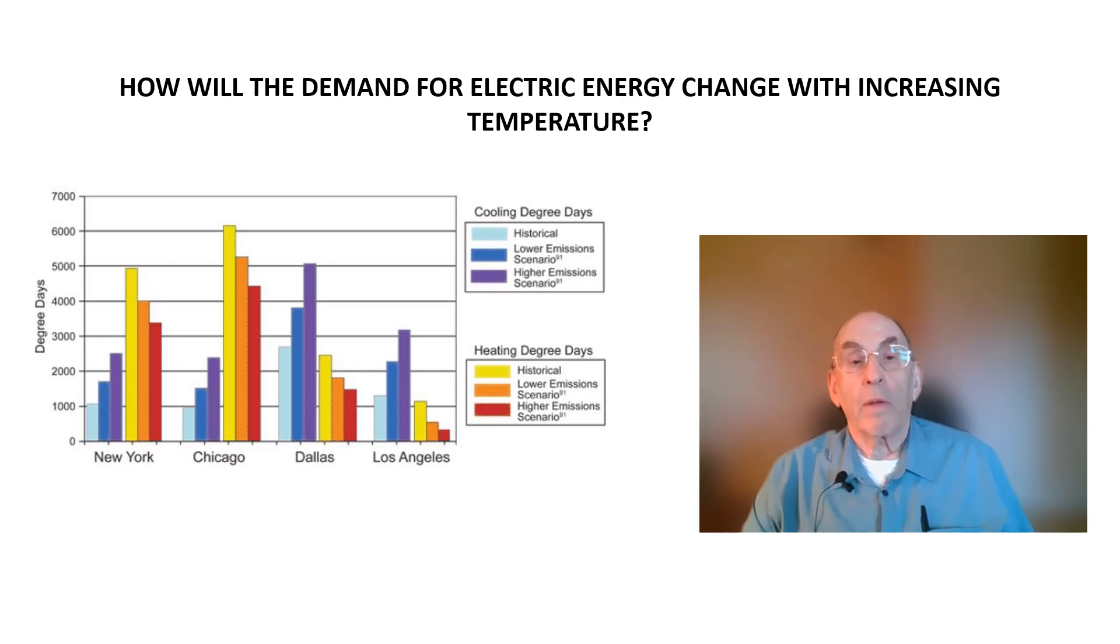The primary takeaway from this chart is that to meet the demand for more air conditioning in the United States over the next 50 years, we will need to increase our electric generating capacity by somewhere between 10 and 20 percent. Note that this does not include the added generating capacity that will be needed for electric vehicle charging as the number of electric vehicles on the road increases.